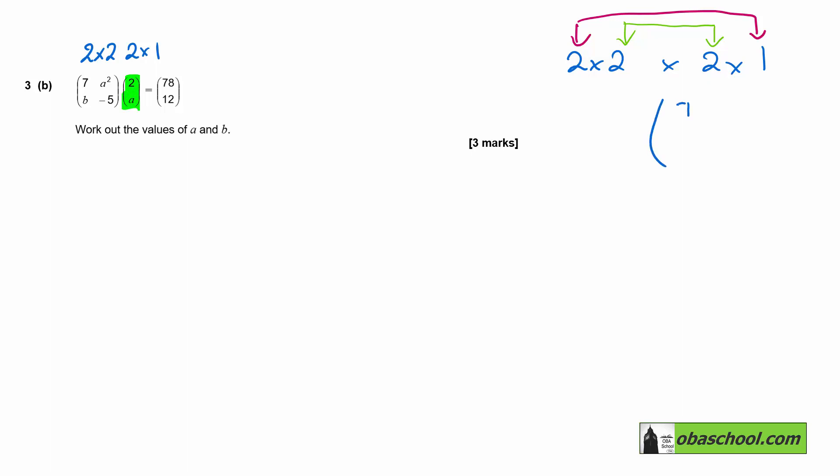For a two by one matrix, just think of it as being the top and the bottom. And to get the top, we multiply the top row here by the matrix. So seven times two is 14, a squared times a is a cubed. So that's 14 plus a cubed. Do the same with the bottom, and we're going to get 2b minus 5a.